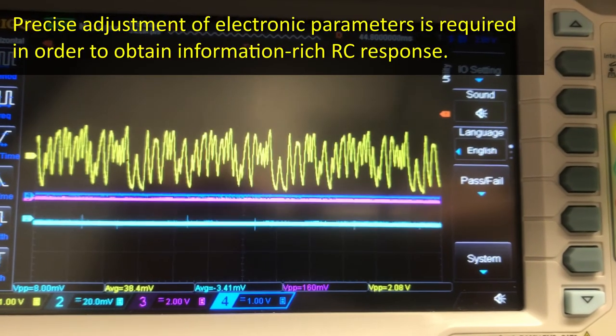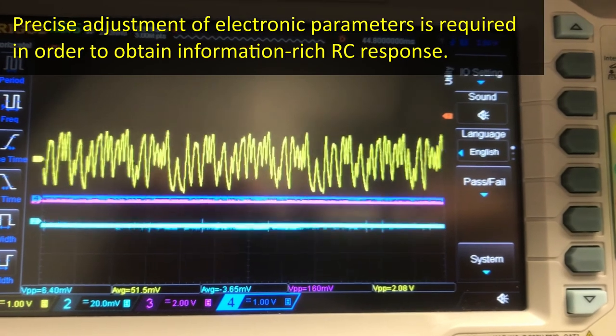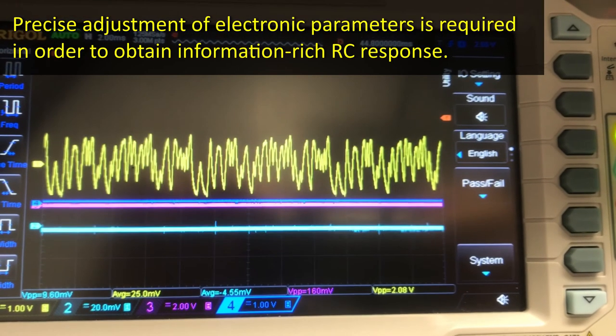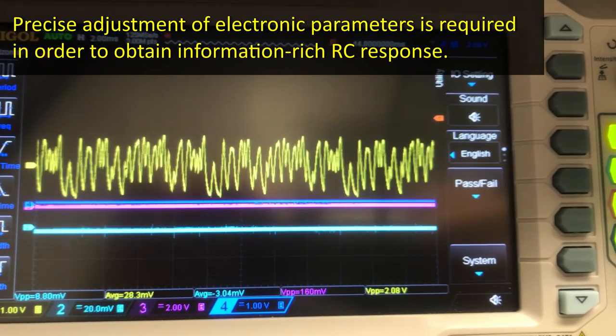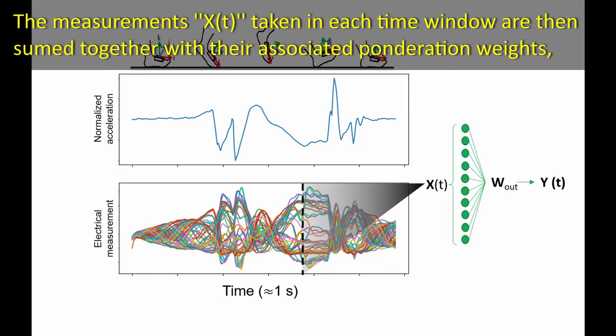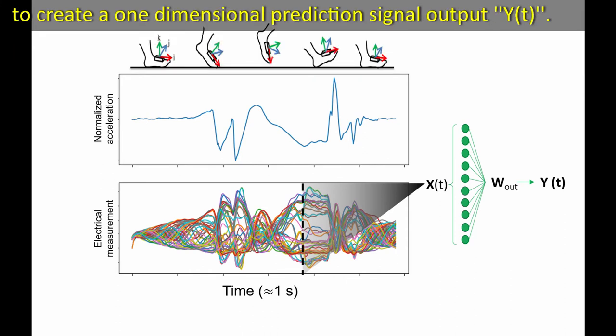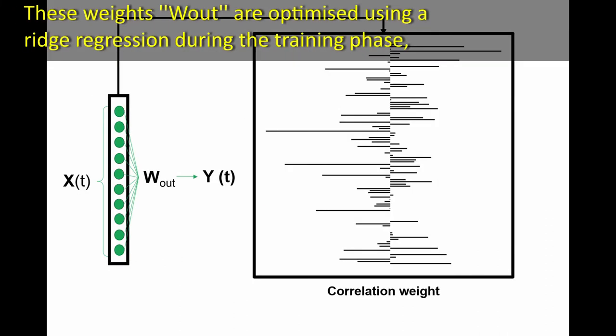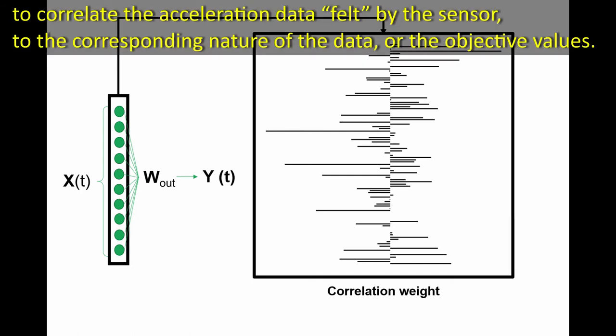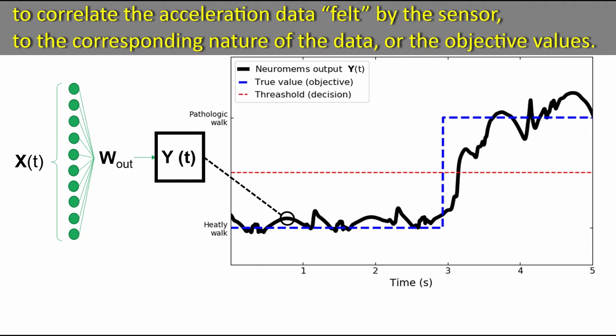Precise adjustments of electronic parameters are required in order to obtain an information-rich reservoir-computer response. The measurements X taken in each time window are then summed together with their associated ponderation weights to create a one-dimensional prediction signal output Y. These weights are optimized using a ridge regression during the training phase to correlate the acceleration data felt by the sensor to the corresponding nature of the data or the objective values.